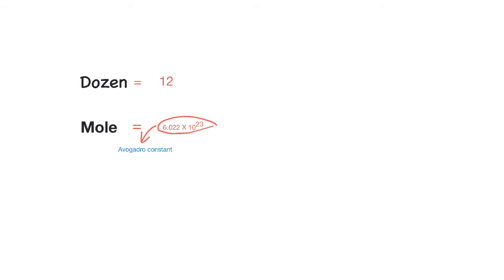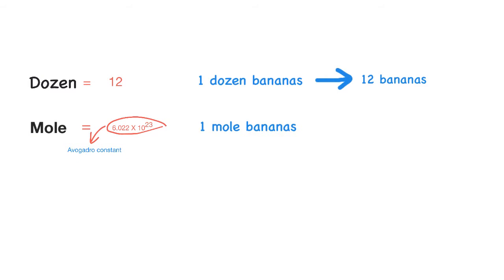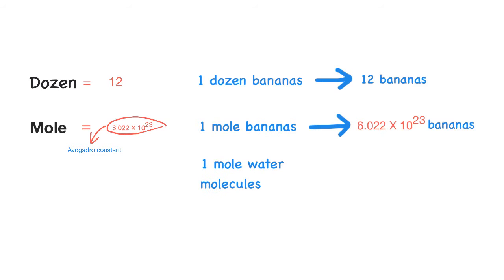So if I say one dozen bananas, it means 12 bananas. If I say a mole of bananas, it means 6.022×10²³ bananas. If I say a mole of water molecules, it means 6.022×10²³ water molecules.